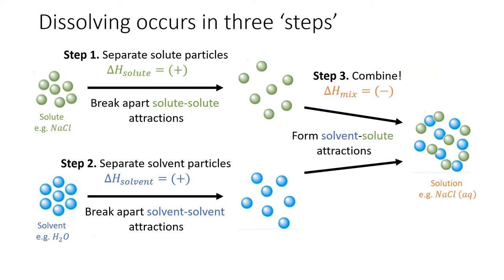Now that we have broken the solute-solute attractions and made room in the solution, the third and final step is to mix the two substances together. This process is exothermic because new attractions are formed between the solute and solvent particles. The enthalpy of this step is directly related to the strength of the IMFs created between solute and solvent. When they share many strong IMFs this step is very exothermic; when they do not, the enthalpy of this step is very low.